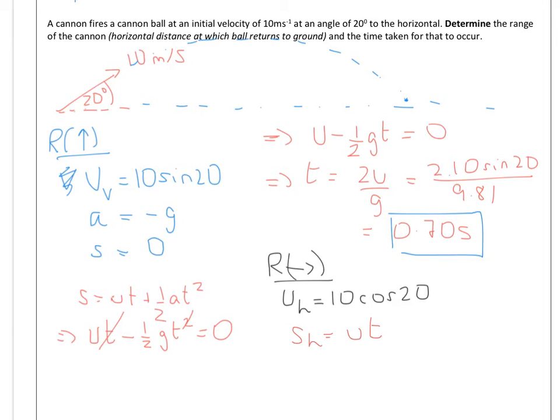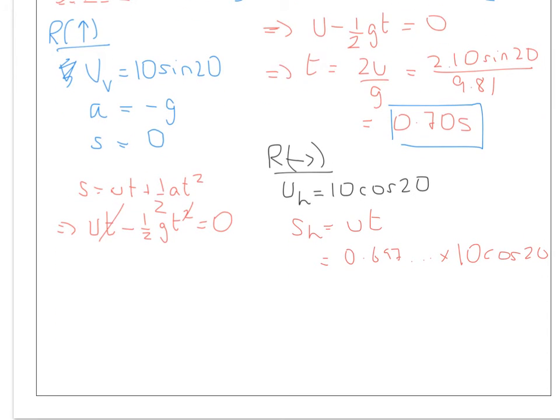So essentially we know that the horizontal distance is just going to be ut, because a is 0 so the half a t squared is 0, which is just—it's 0.697 is the time, unrounded, times by 10 cosine 20, which is your u. So times by 10 times cosine 20.